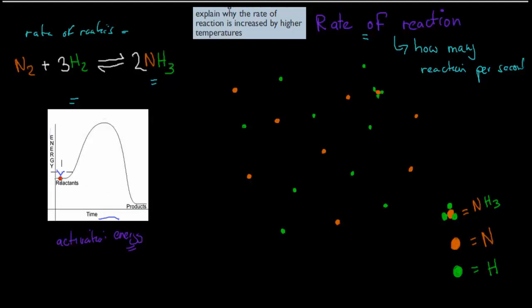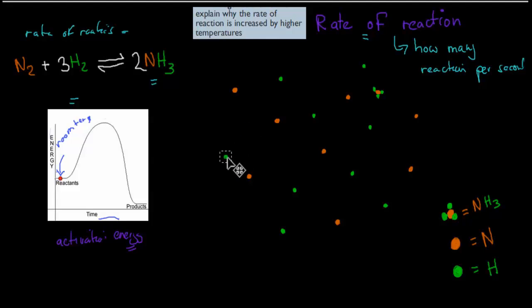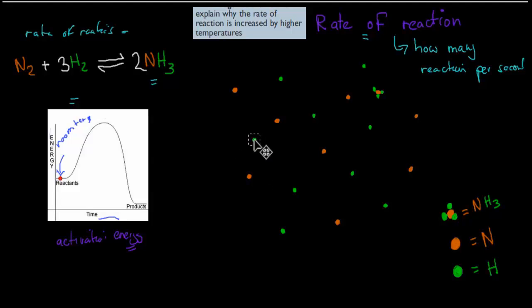Let's say we're here — this might be room temperature. If we are here, we are not over the hill. We've got nitrogen as orange, hydrogen as green, and ammonia as a combined one. If we have a low temperature, the problem is it will move too slow — it won't have enough energy. Even if they collide, three of these hydrogens have to hit one nitrogen for a reaction to occur. But even if they do collide, if the energy isn't high enough, if it's not moving fast enough, nothing happens.